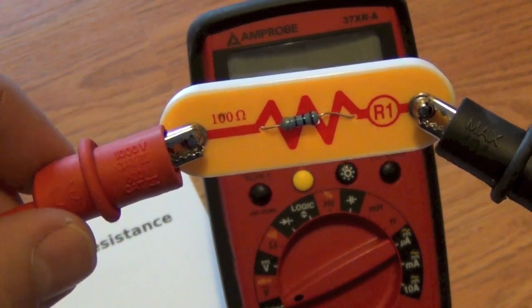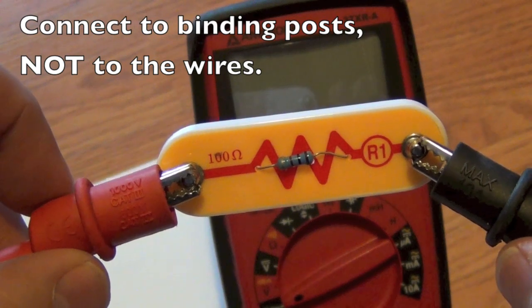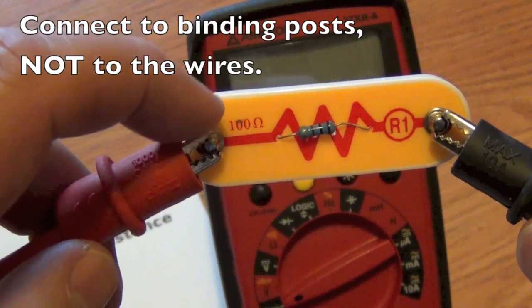Word of caution. When measuring resistance, always connect to the resistor posts, not to the wires.